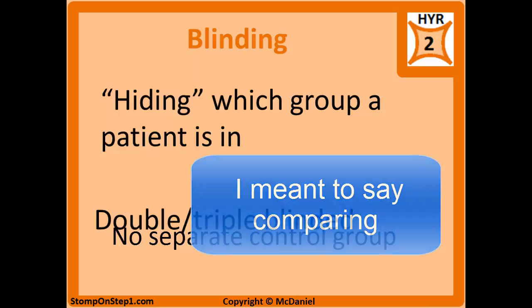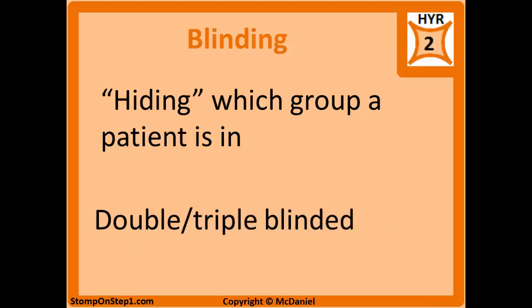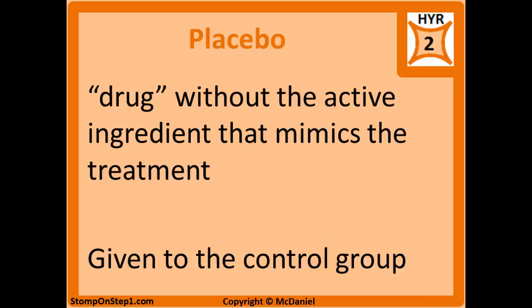Researchers could also accidentally tip off patients to which group they're in. The key to blinding in a treatment study is a placebo — a drug without the active ingredient that closely mimics the actual treatment. If the treatment is a pill, the placebo will also be a pill that's virtually the same size, shape, and color, so that patients and providers can't tell the difference. Essentially, the placebo is given to the control group as a way of giving them no drug without them knowing.